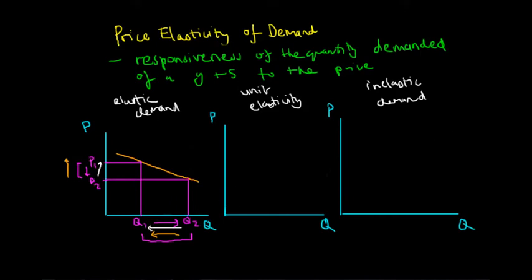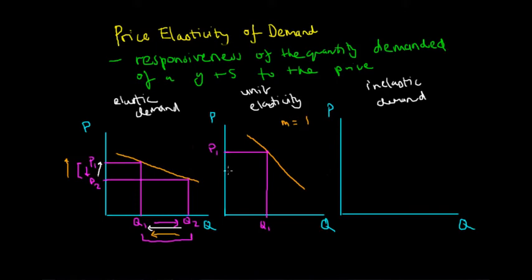Secondly, we have a unit elastic product. The demand curve has a gradient of one — m equals one, where m denotes the gradient. If the price starts at P1, the corresponding quantity is Q1. If the price decreases to P2, the quantity demanded at P2 according to this demand curve would be Q2.